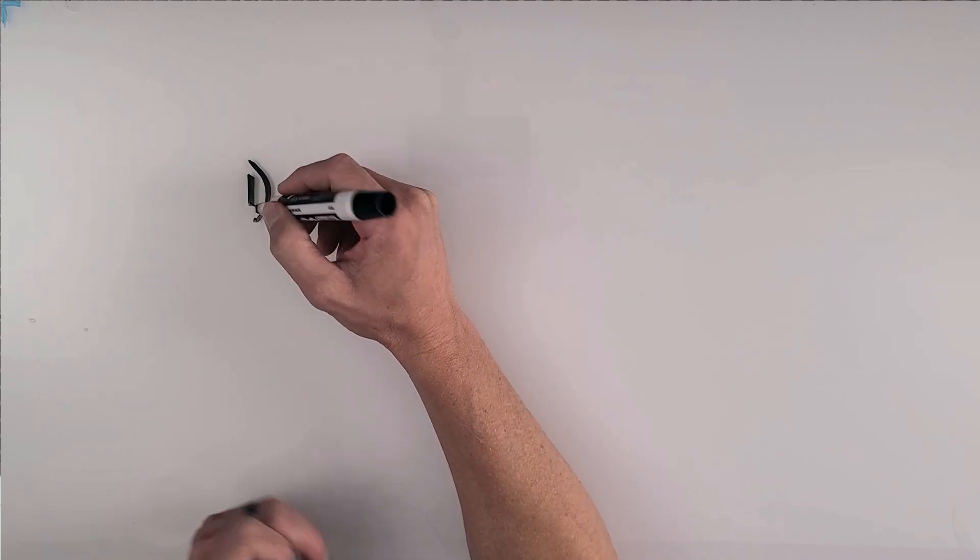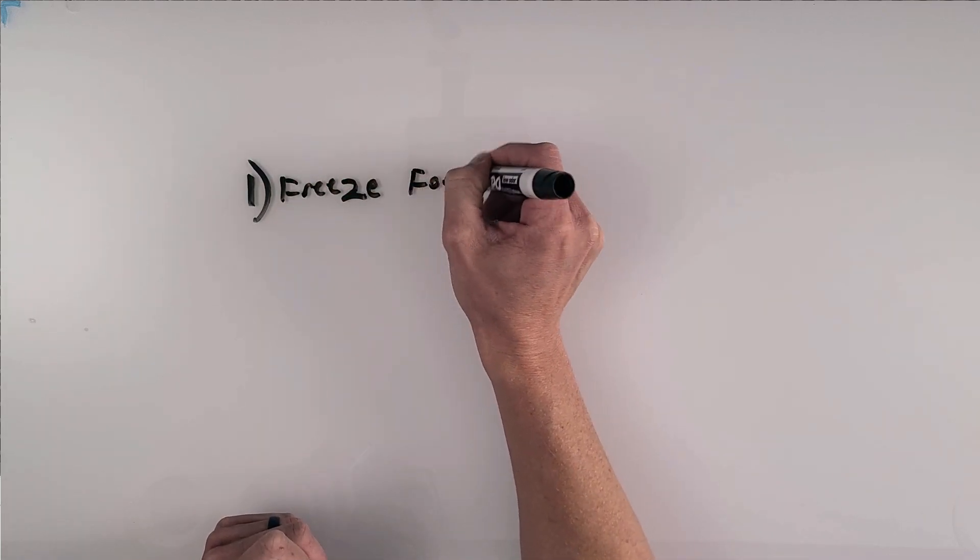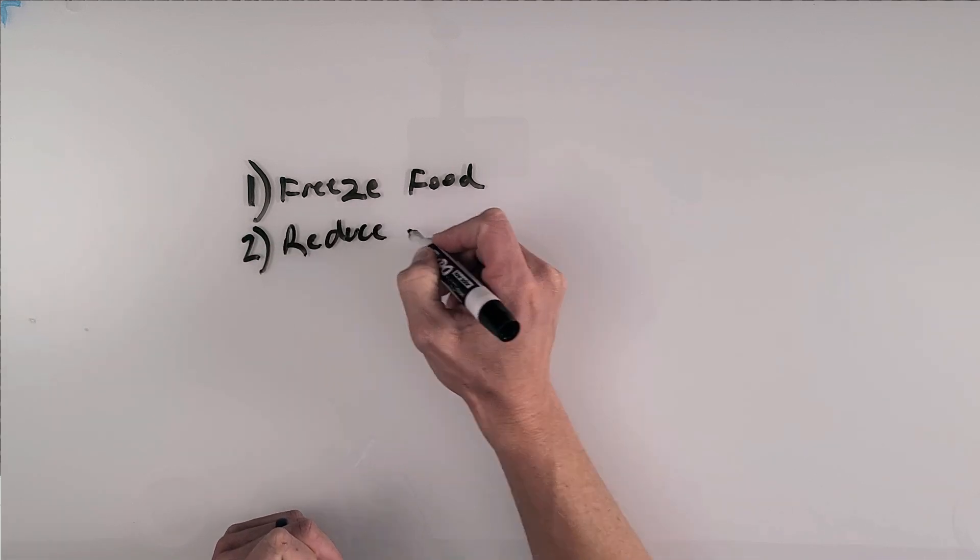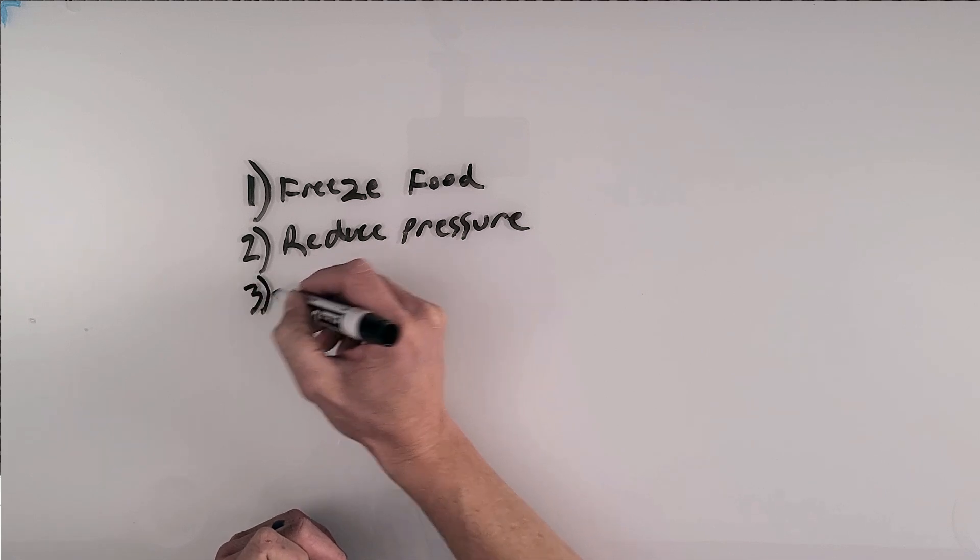So step one, we are going to freeze our food. Once the food is frozen and there's ice crystals in it, we need to go ahead and drop the pressure inside the food chamber. So step two is reduce pressure. We now need to gently heat the food. The last step is just simply heat it.